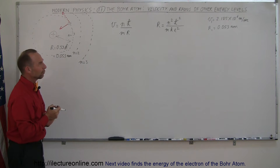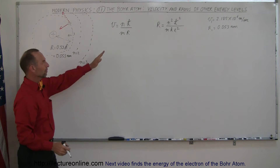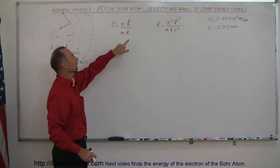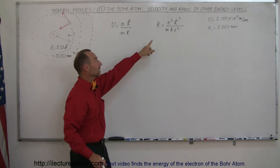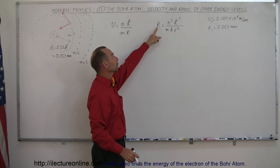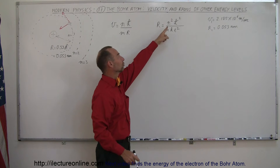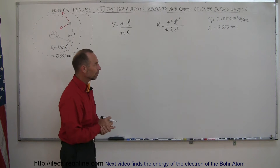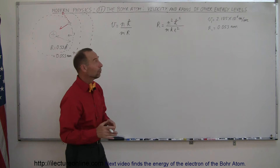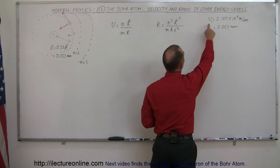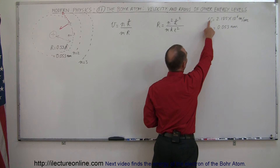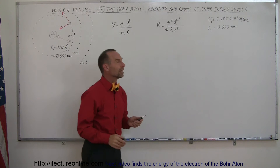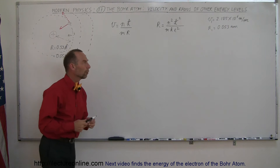So how do we figure that out? We have the equation for the velocity as a function of the energy level and the radius of the orbit, and the equation for the radius in terms of the energy level squared and some other variables. When we deal with the innermost energy level, the velocity equals this and the radius equals that, also known as the Bohr radius.